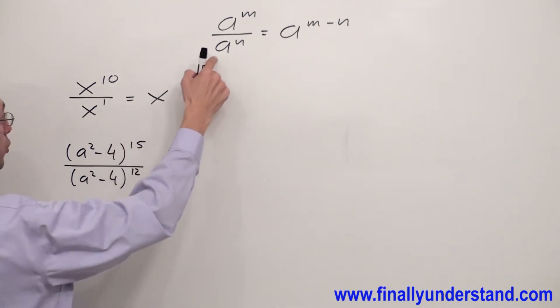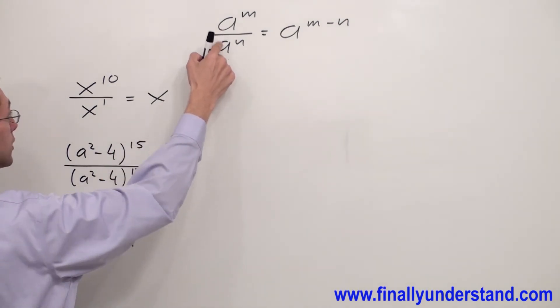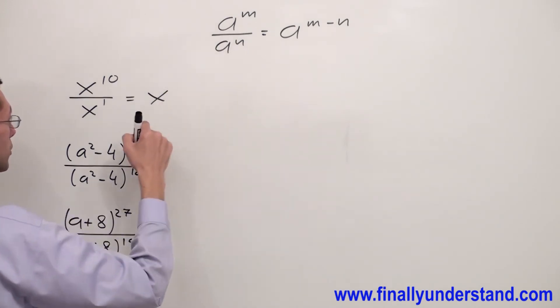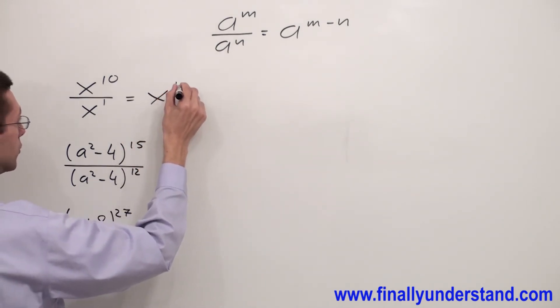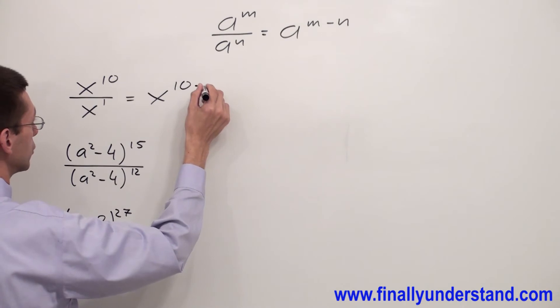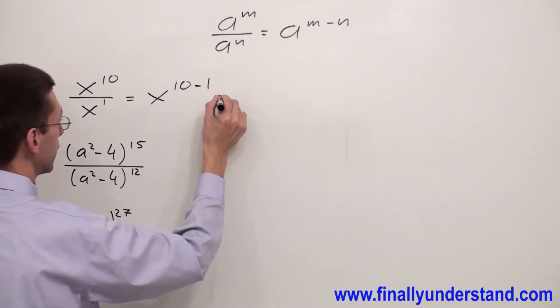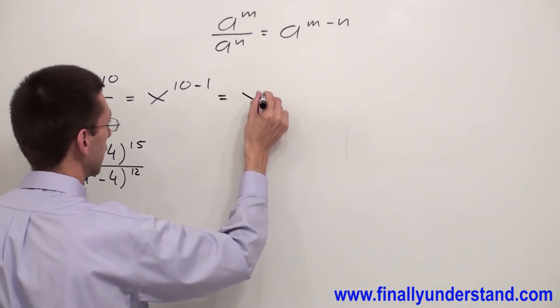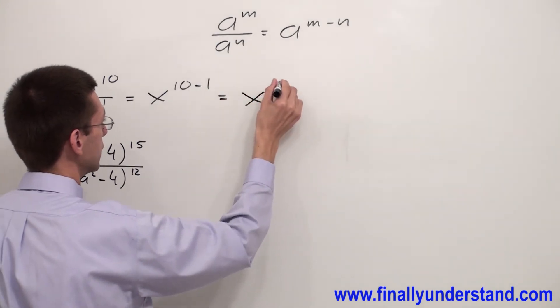According to the rule, anytime we have the same base, we keep the base and subtract the exponents. So I'm going to have 10 minus 1, which equals x^9. This is the solution to this problem.